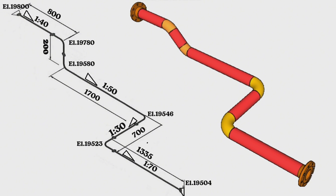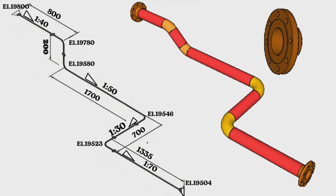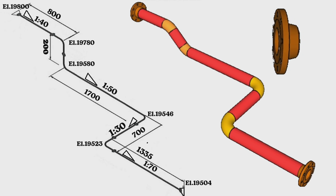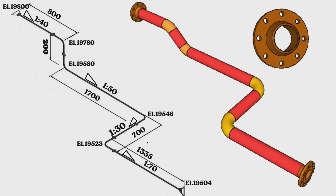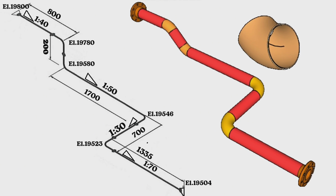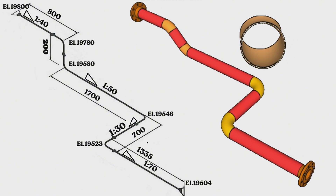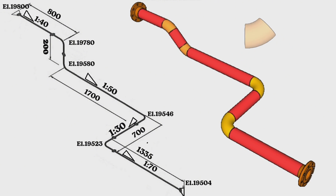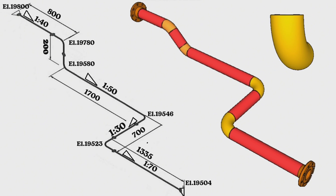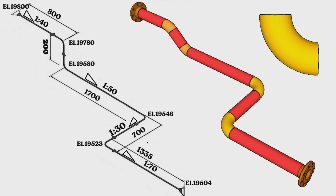As you can see, in this pipeline we used two pieces weld neck flanges, two pieces 45-degree butt weld pipe elbows, two pieces 90-degree butt weld pipe elbows, and five pipe pieces.